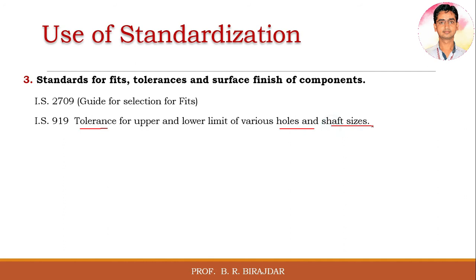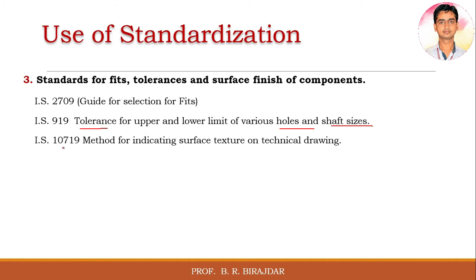To specify the upper and lower limit tolerances for holes and shafts, we use IS 919. Indian Standard IS 10719 is the method for indicating surface structure on technical drawings — what the surface finish should be after manufacturing a component. IS 8000 covers geometrical tolerances, which include parallelism, perpendicularity, concentricity, and circularity, and how these should be indicated.